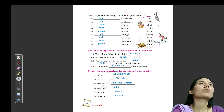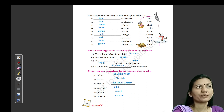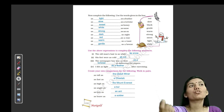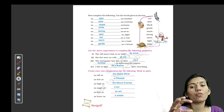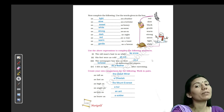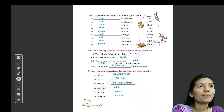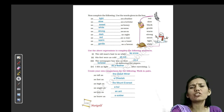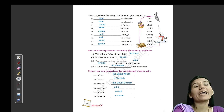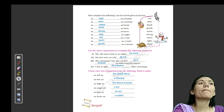Now use the above expressions to complete the following sentences. First one: the old man's hair was as white as snow. Delivering the paper — I felt as light as a feather. After exercising I feel very relaxed.